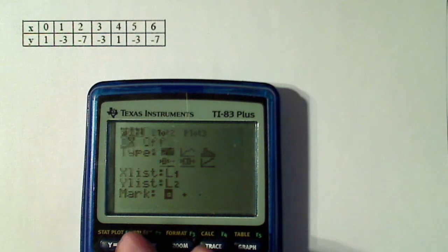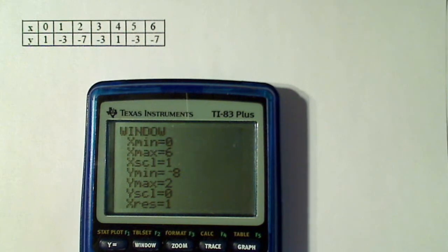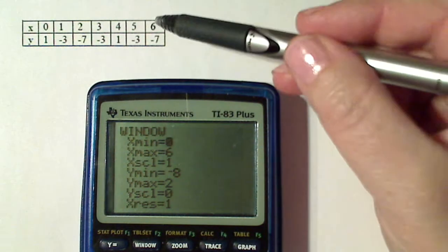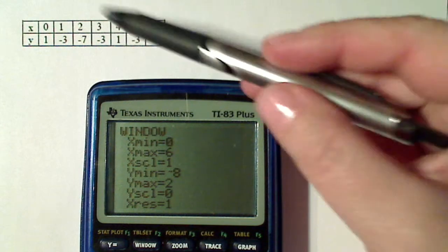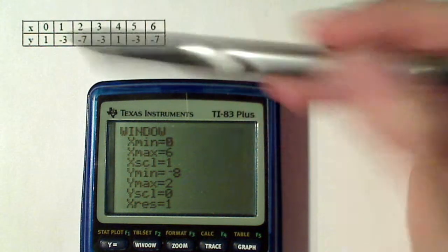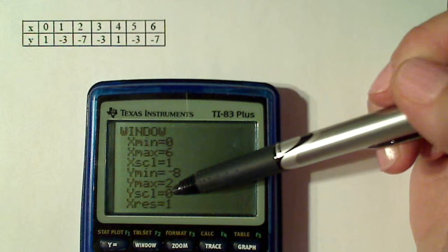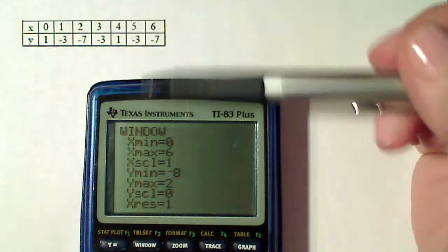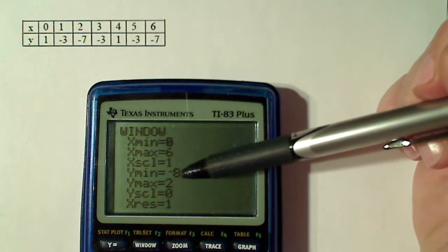Now, as far as my window is concerned, it looks like my X values go from zero to six and my Y values, the highest it goes is one, so I'm going to have Y max at two. And the lowest is minus seven, so I have it at minus eight.